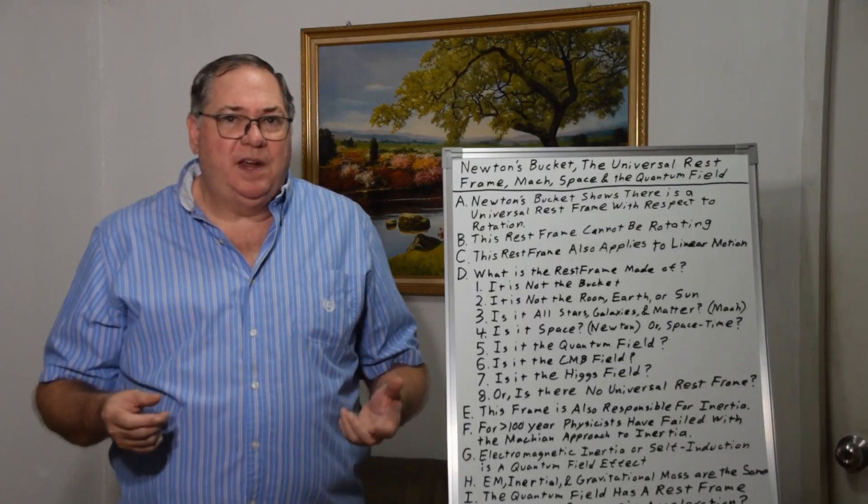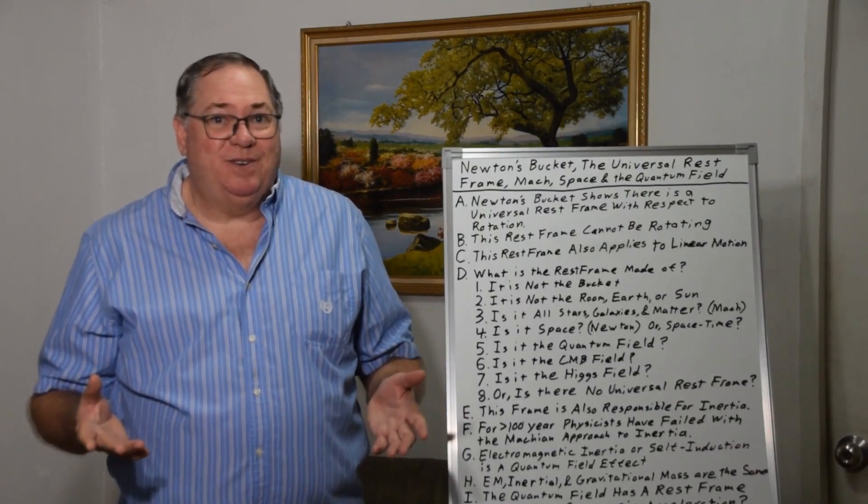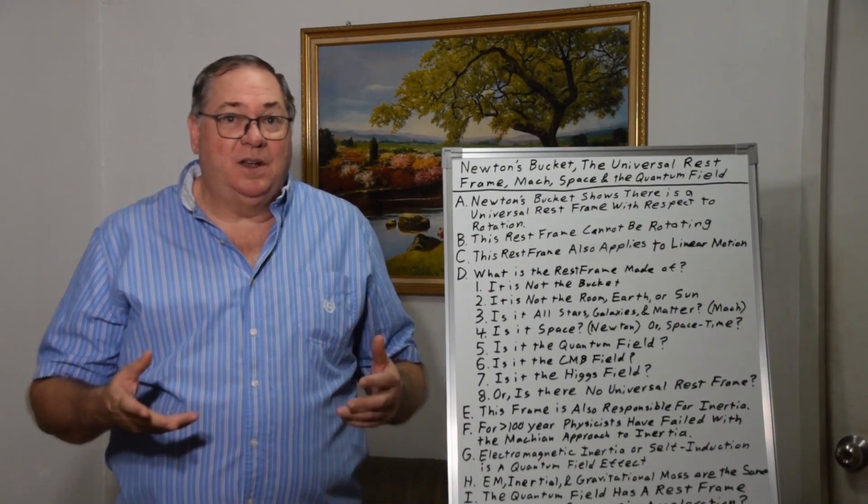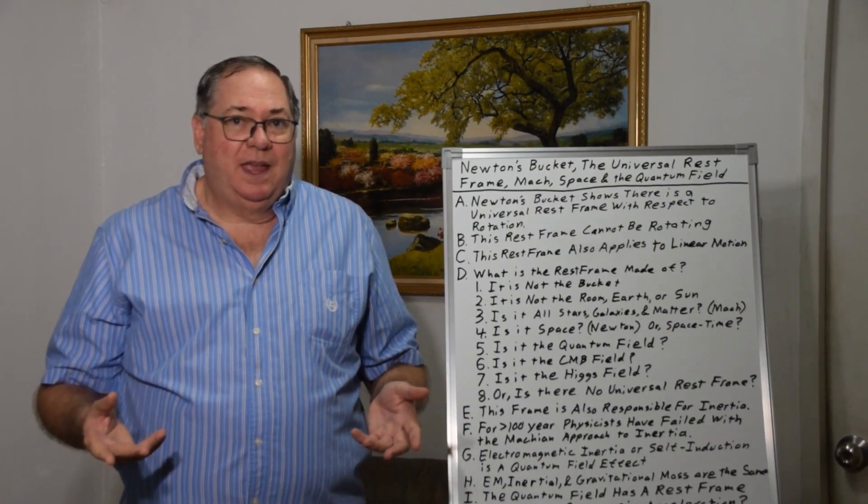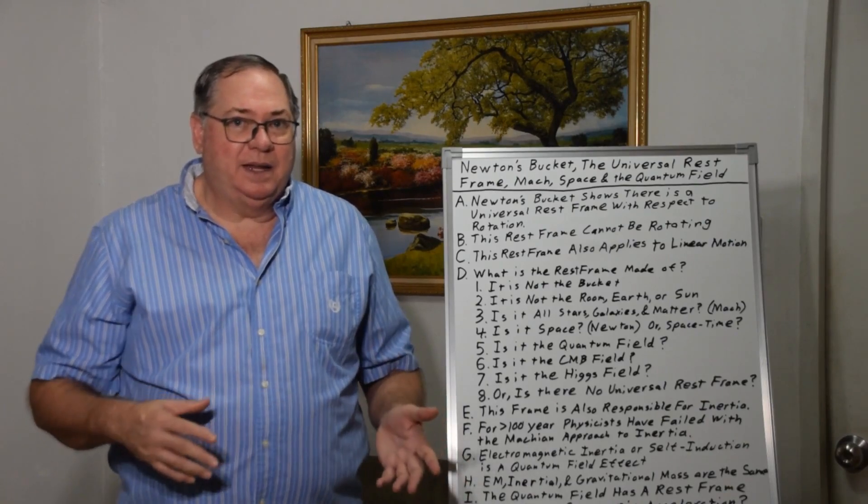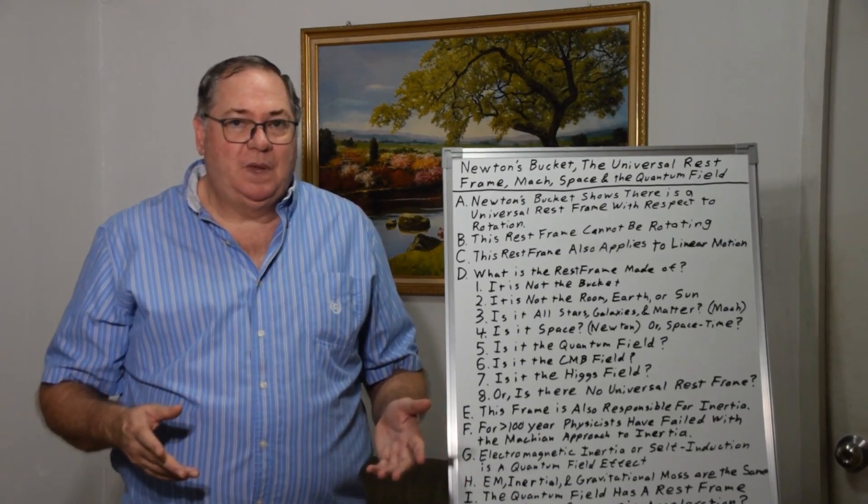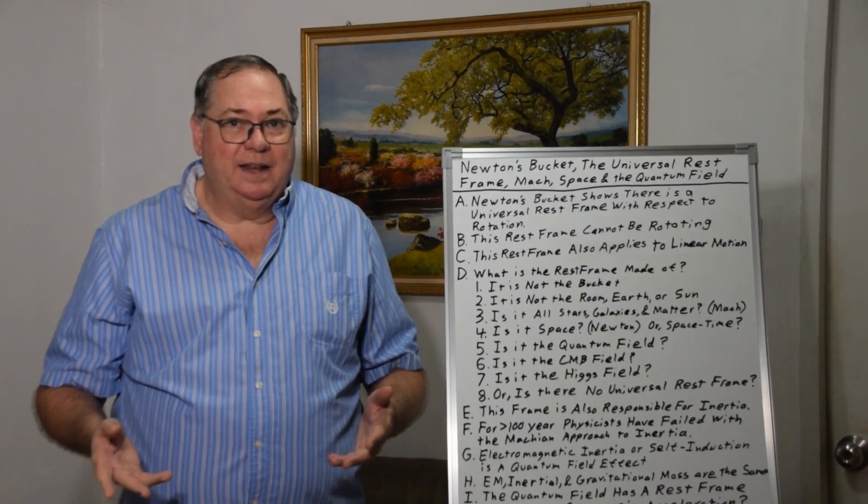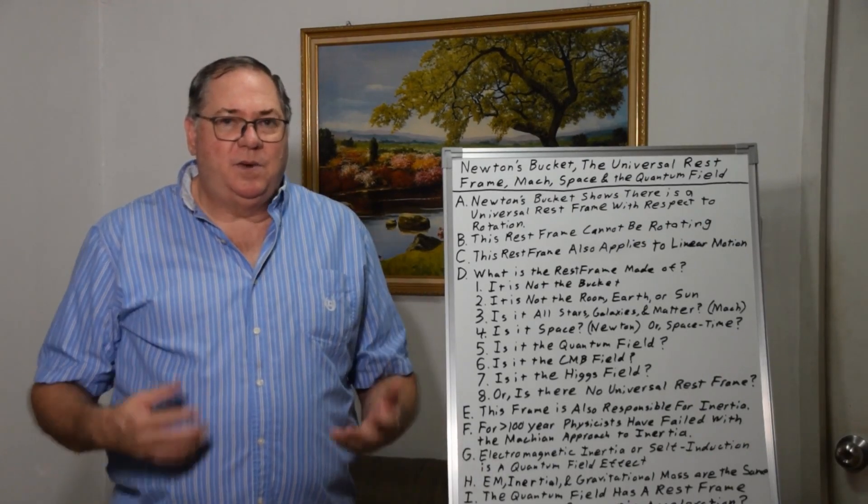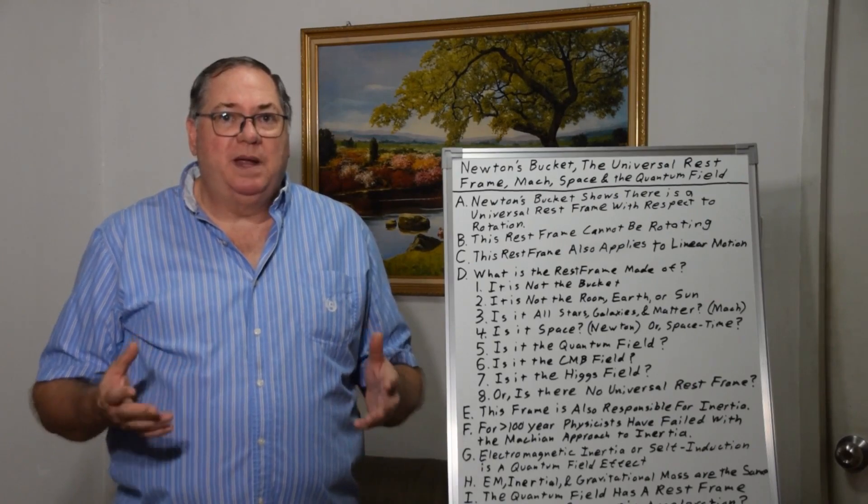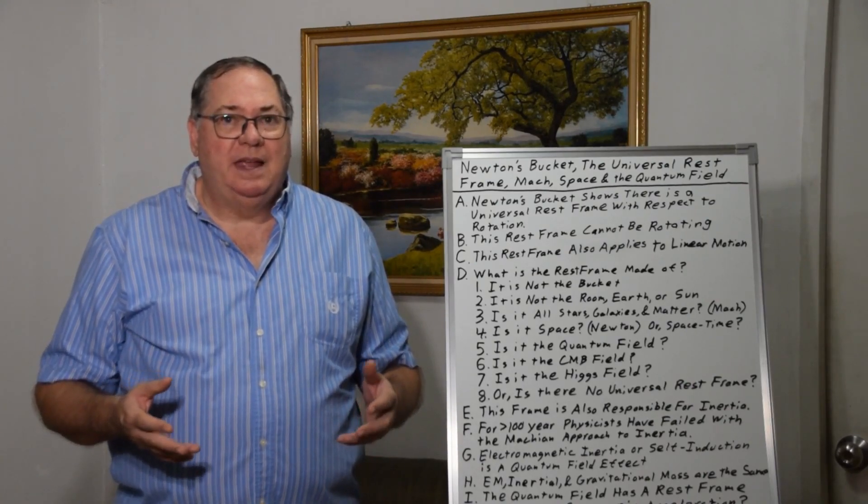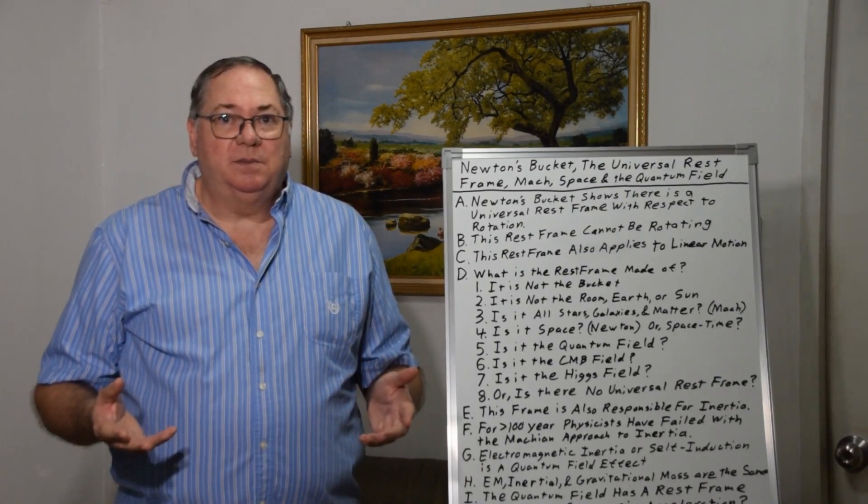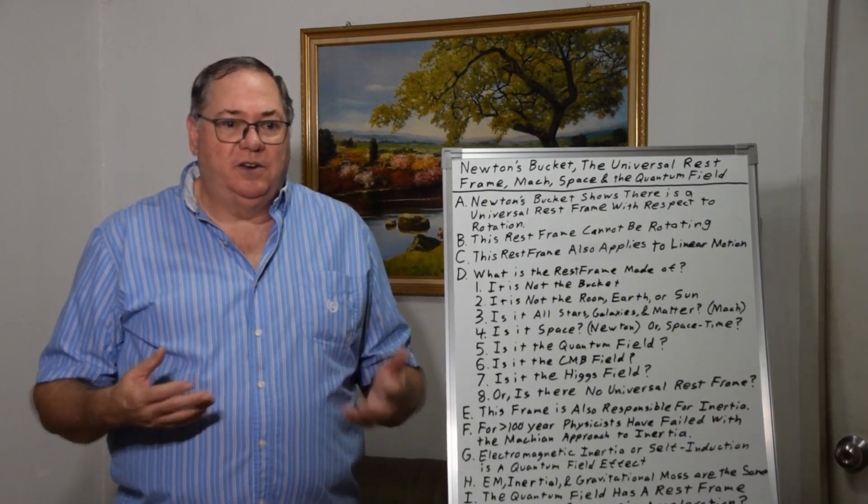So, we have to figure out what is this universal rest frame and how does it cause inertia? And as I said, the Machian experiment has failed and I think we should look at the idea that it's quantum field. So, we have to ask the question, what makes up this universal rest frame? How does it interact with water? How does it interact with gyroscopes? How does it cause inertia?